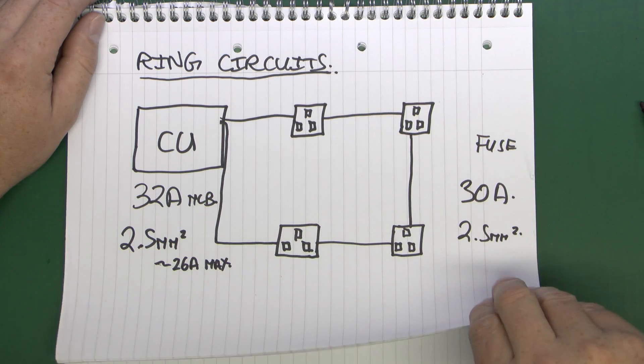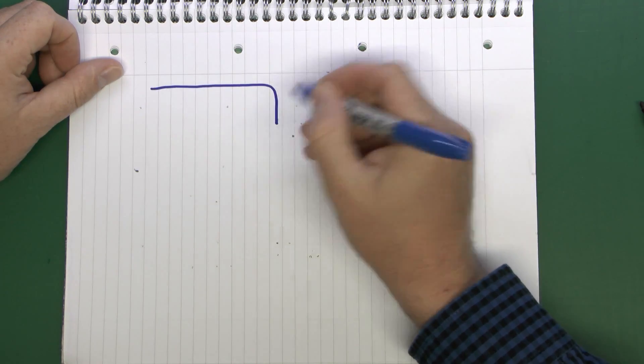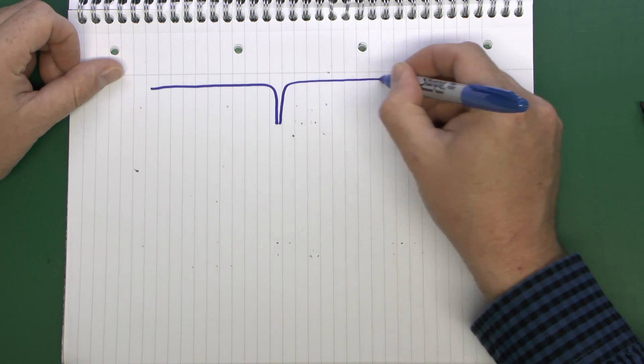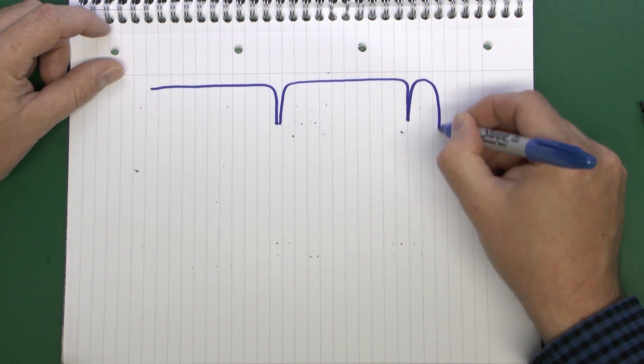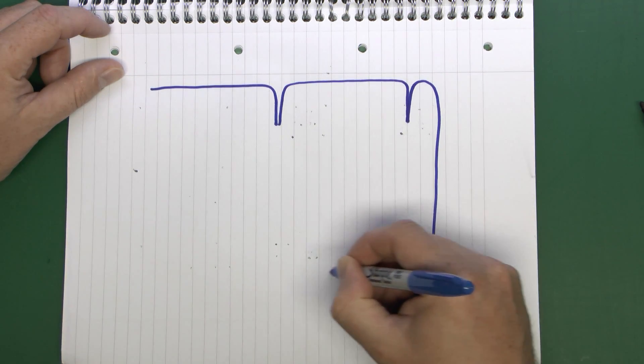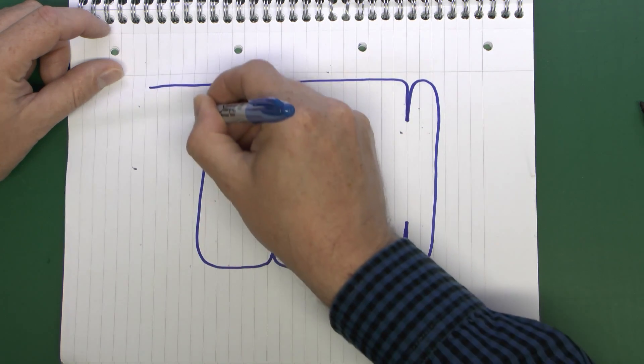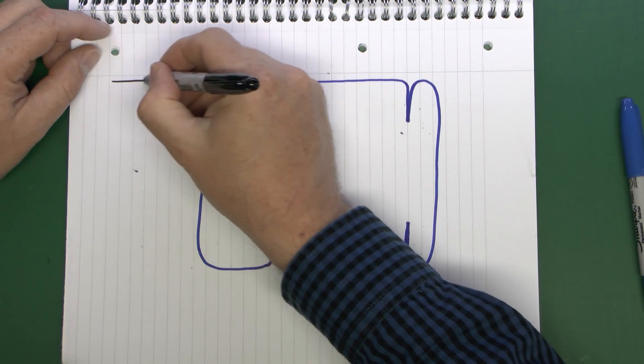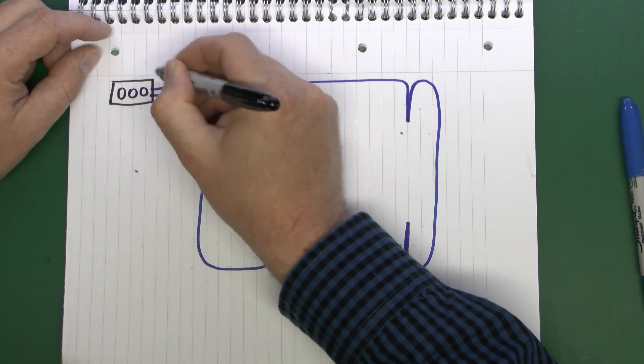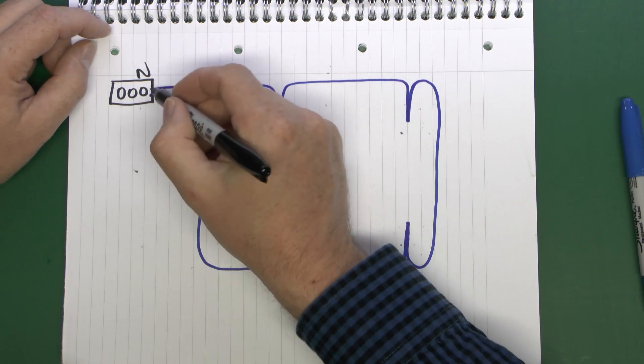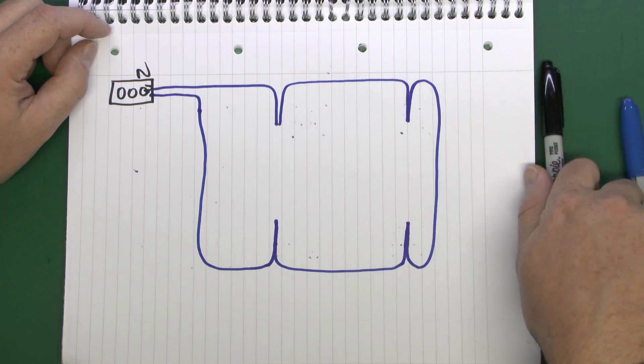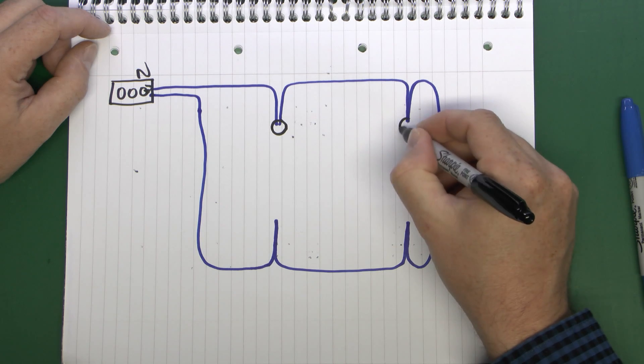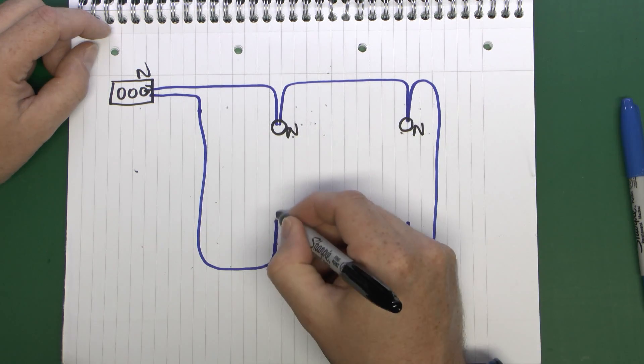When you actually come to installing these things, the wiring is reasonably straightforward. So your neutral would come from the consumer unit into your first socket, and then from there to the second socket, and from there to the third one and the fourth one. Then when it returns to the consumer unit it actually goes back into the same neutral bar. So here we have the neutral connection inside the consumer unit and both wires go into the same terminal. Where you have the socket, both wires are going into the same terminal on the back there marked N for neutral.